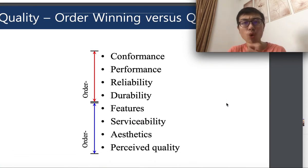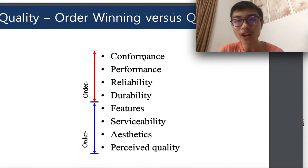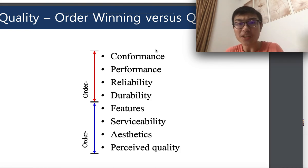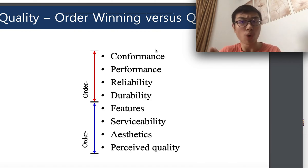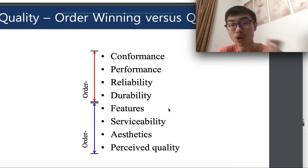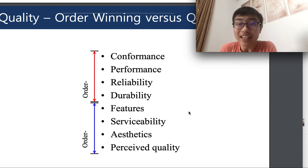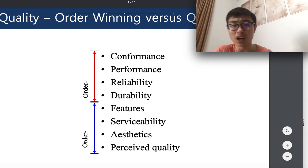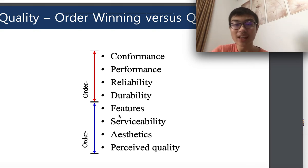Now let's classify these eight dimensions into order qualifying and order winning dimensions. The first four — conformance, performance, reliability, and durability — are order qualifying dimensions. This means if a product doesn't meet the standard of these four dimensions, it may not even qualify for stable sales in the market. The last four — features, serviceability, aesthetics, and perceived quality — are order winning dimensions. If your product reaches the standard of these four, it has a higher chance of winning more sales compared to products that only meet the first four.